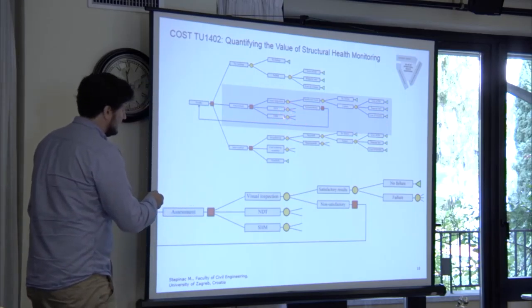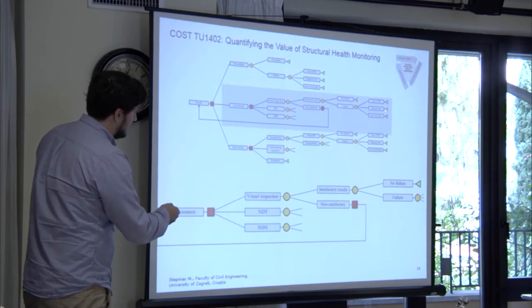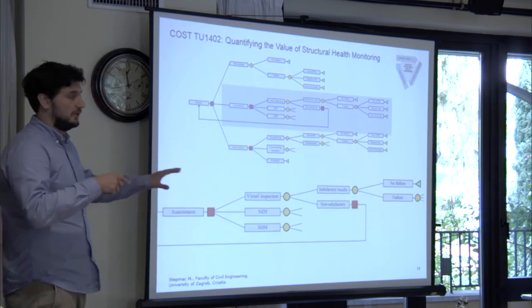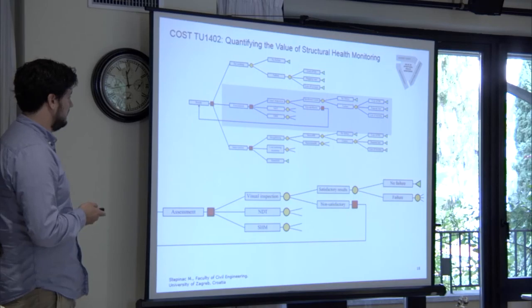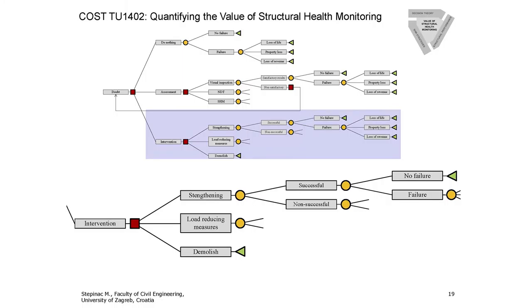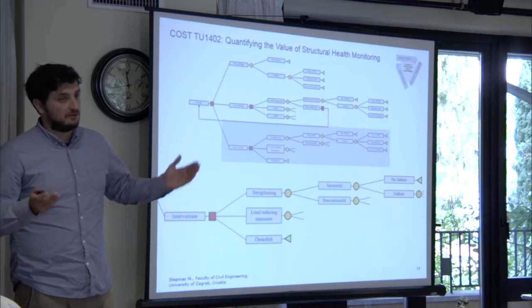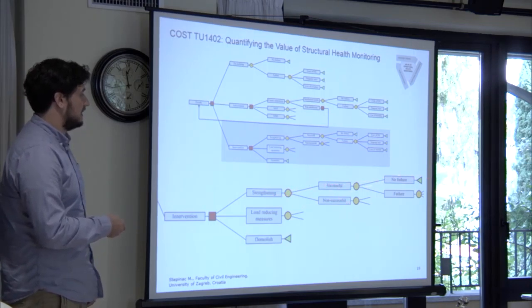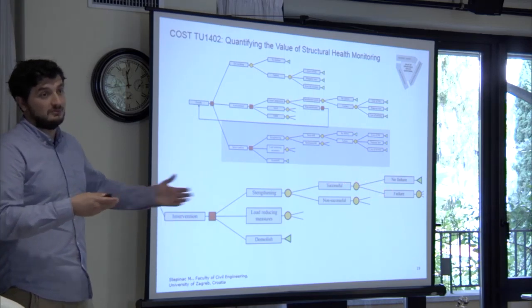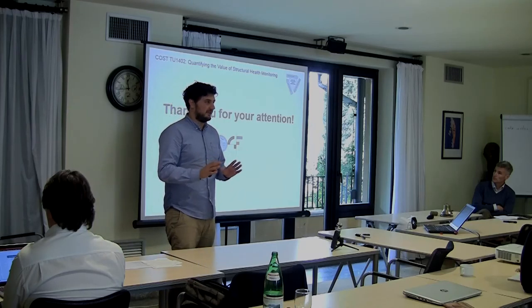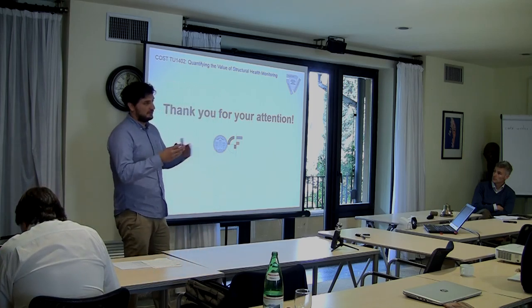This is just to visualize the flowchart and decision tree, as it was impossible to show it fully in a PowerPoint presentation. The last branch is intervention: we can have strengthening of the structure, load-reducing measures such as melting snow, or demolition of the structure. Strengthening can be successful or not successful, leading to no failure or some kind of failure. This was done very briefly yesterday, and I hope I introduced the problem well. I still need to complete the fact sheets. Thank you.